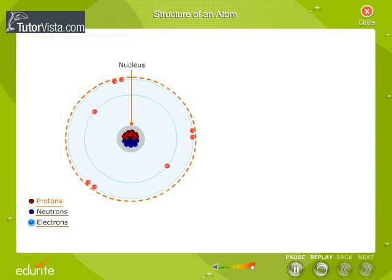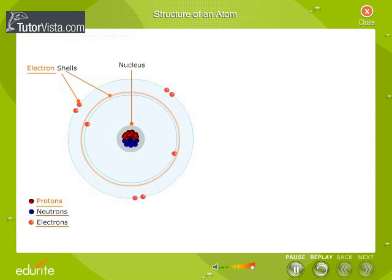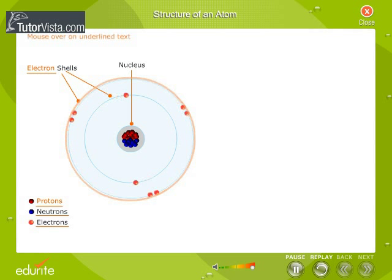The electrons revolve around the nucleus in fixed orbits. These are the electron shells. The space around the nucleus in which the electrons revolve determines the size of the atom.